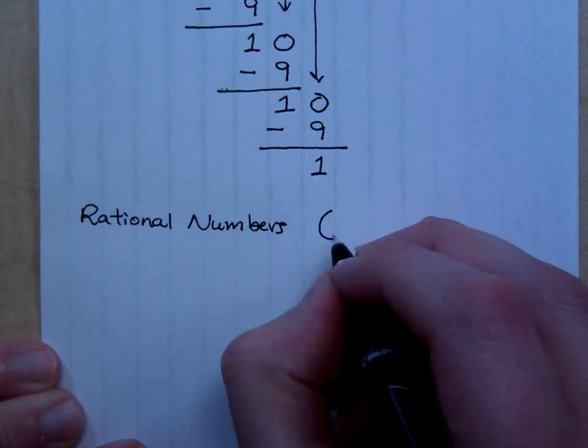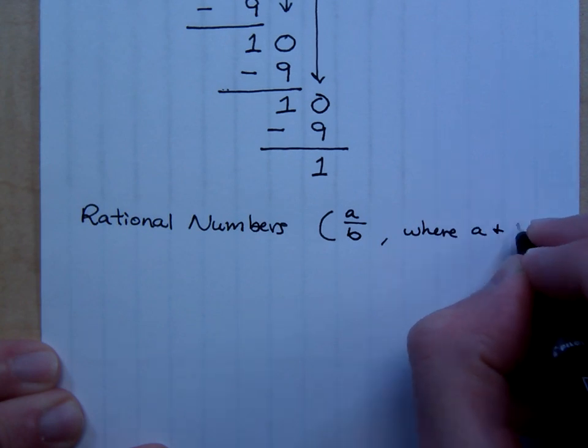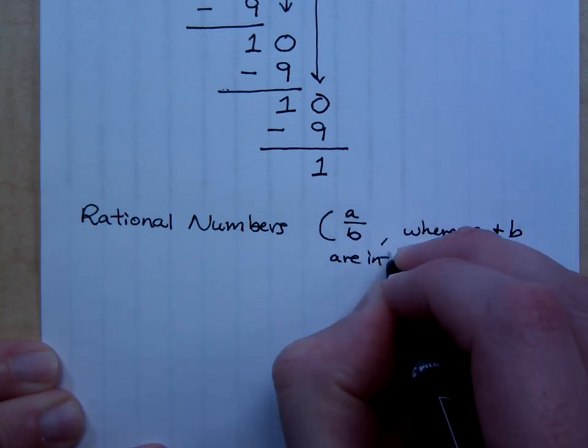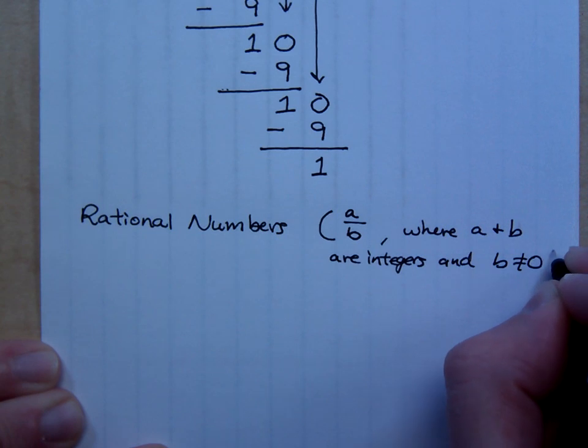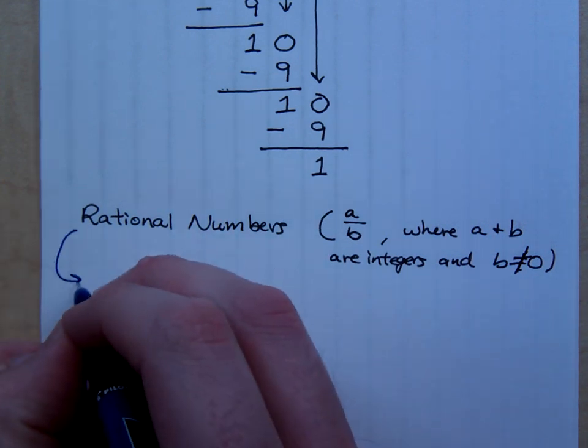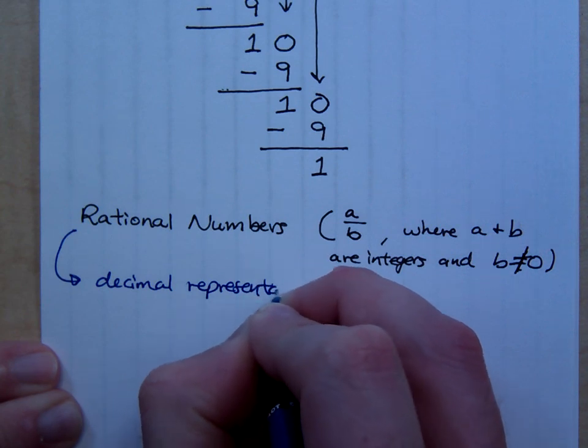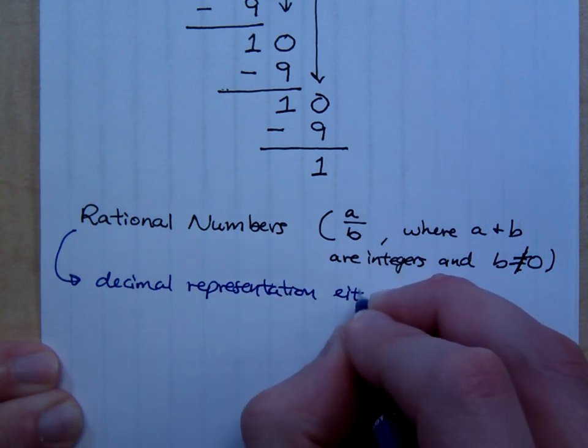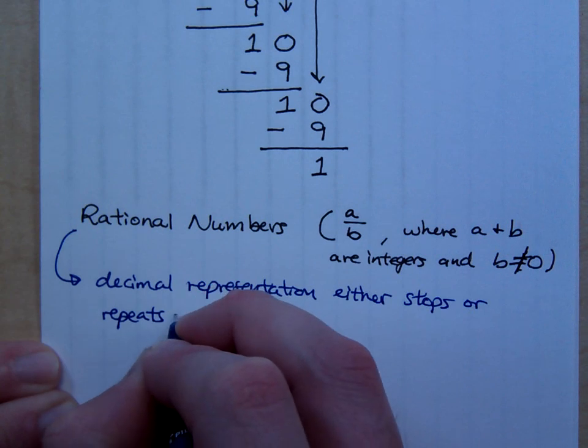Rational numbers are of this form. It's of any fraction A over B where A and B are integers and B does not equal 0. Any fraction that you have with integers and the denominator is not 0, it's a rational number. Now, in terms of decimals, what that means is that the decimal representation either stops or repeats in a pattern.